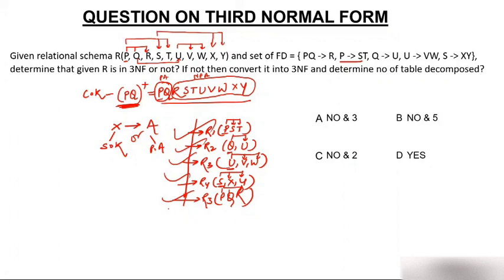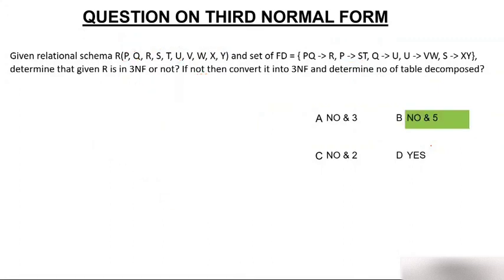We now have five tables after decomposition and all five tables are in 3NF. So the answer is: No, the table is not in 3NF, and it decomposes into five tables.